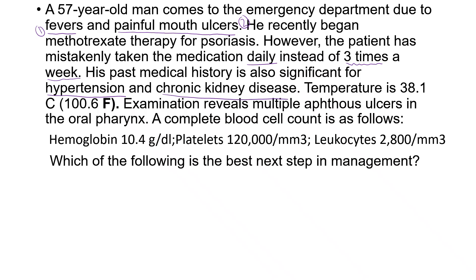Temperature is 100°F — a bit on the higher side. Examination reveals multiple aphthous ulcers in the oropharynx. Complete blood cell count shows hemoglobin fine, platelets normal. Leukocytes are on the lower side. Which of the following is the best next step?